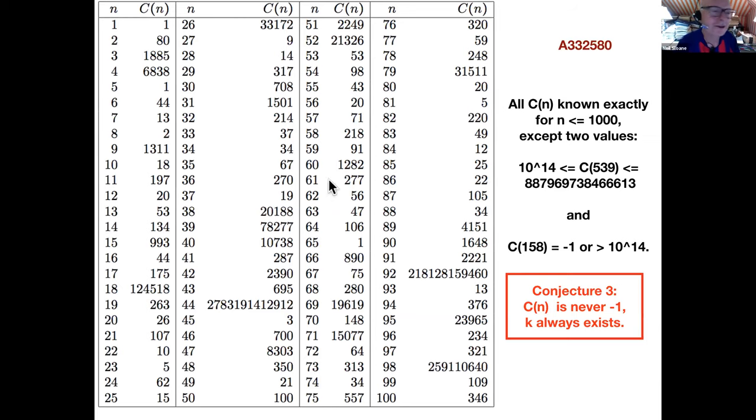Here are the values of the first 100 terms. They're rather irregular. C of 1 is 1, C of 2 is 80, C of 8 is 2, C of 7 is 13, and so on. C of 18 is 124,000. It goes along in a modestly complicated way until you get to 44. What is C of 44? At this point, we ran into trouble. This is where I sent an email to Paul Zimmerman and Joseph Myers also got involved. Being much better programmers than I, they managed to write a series of programs, ever more sophisticated programs that finally found the 44th term.